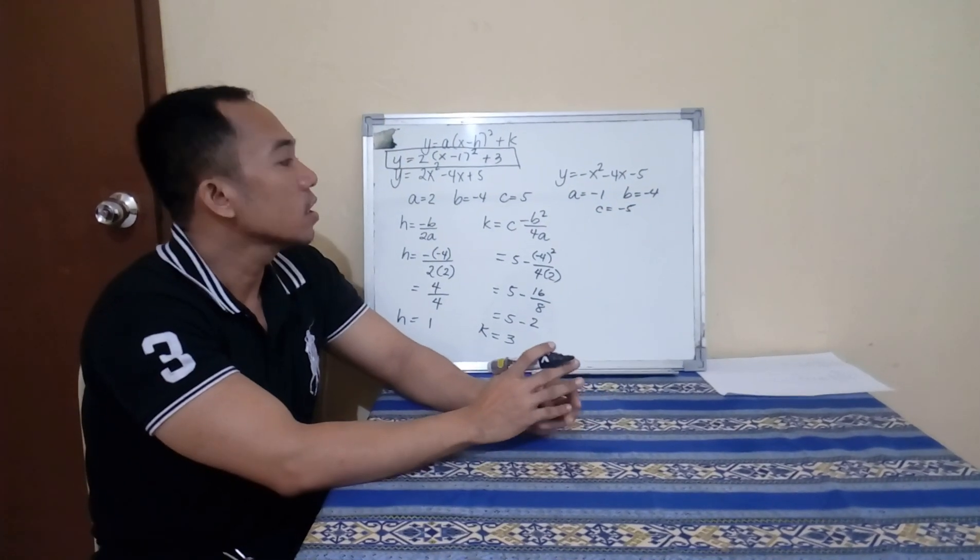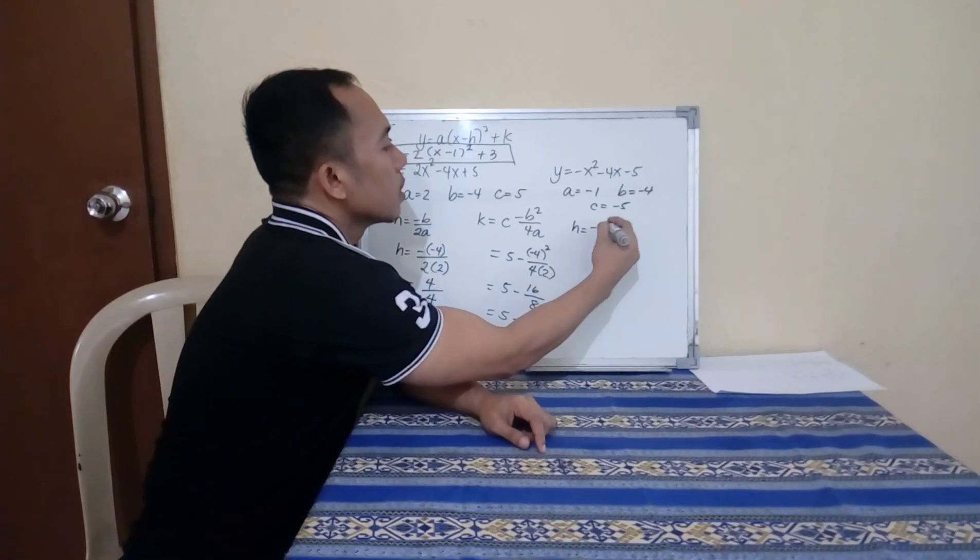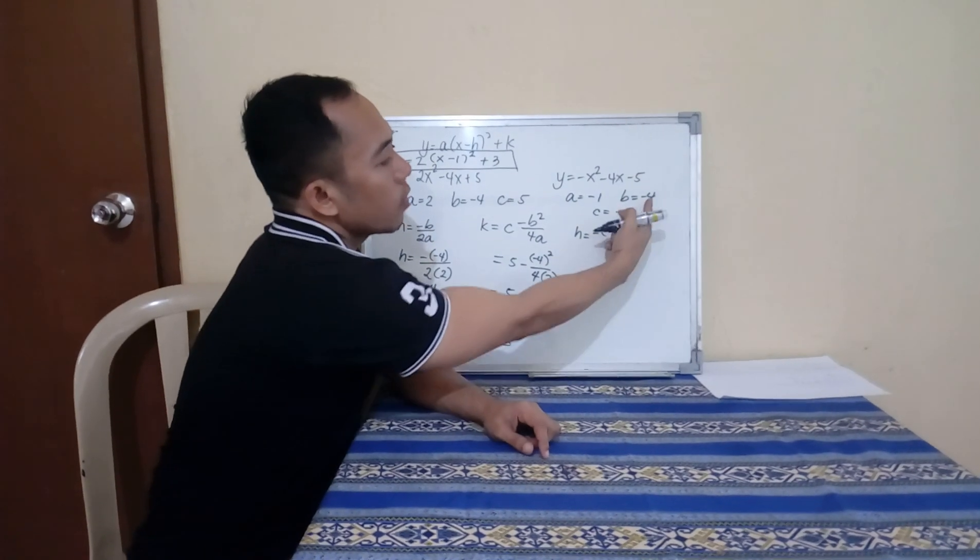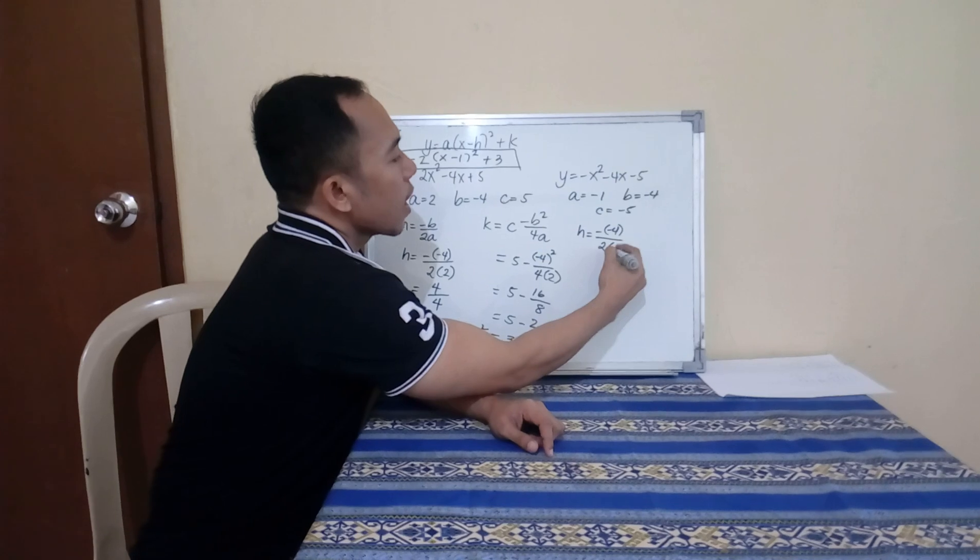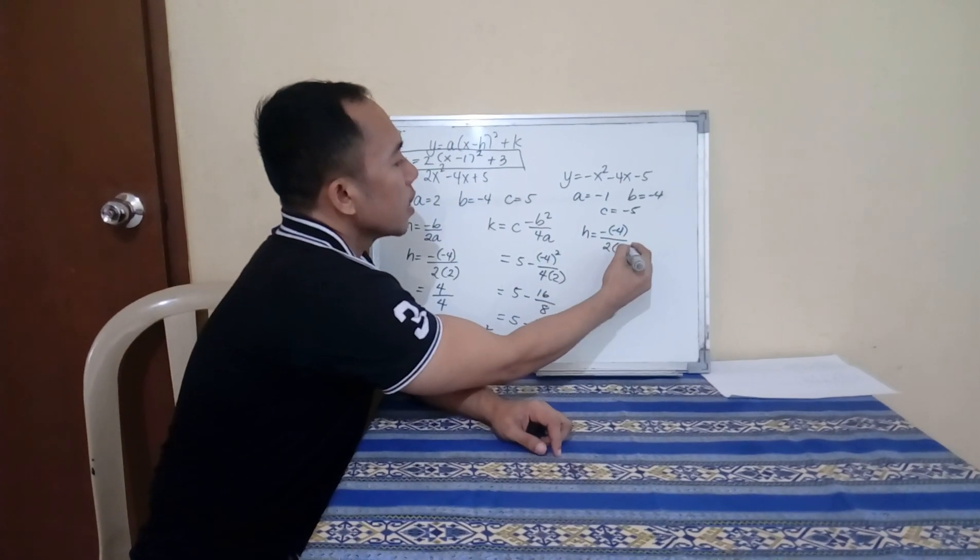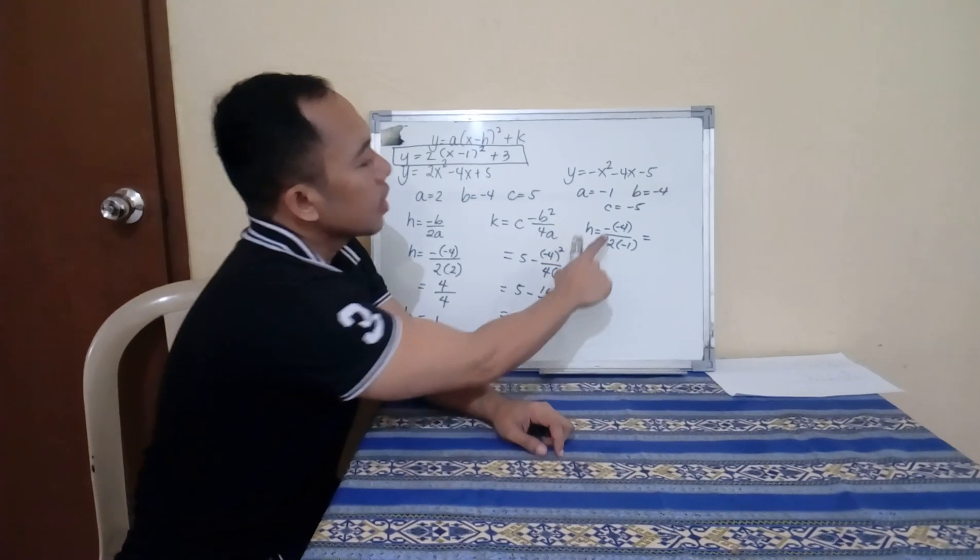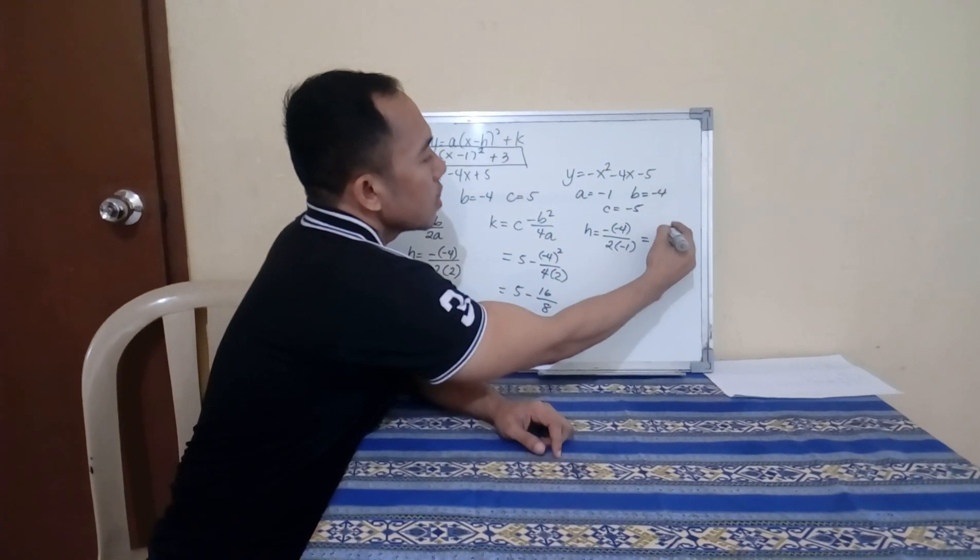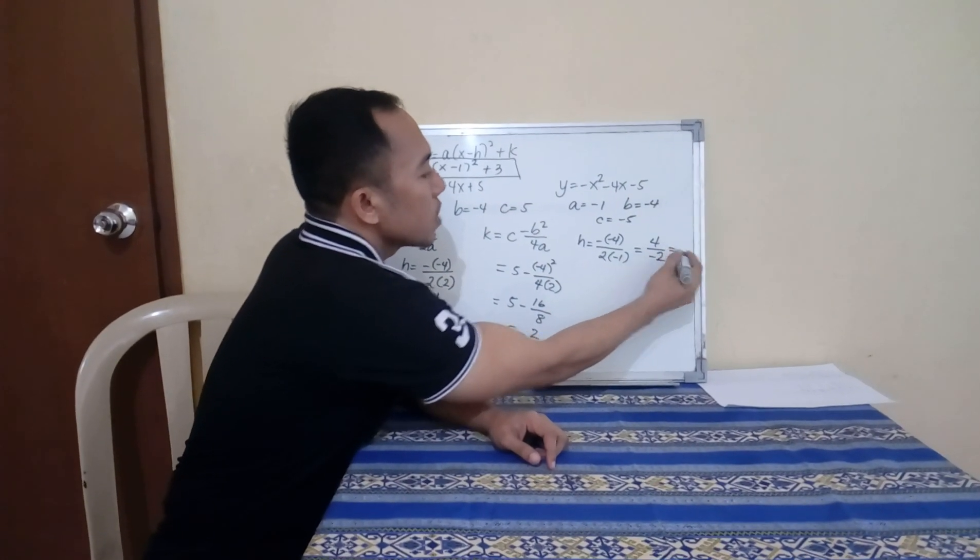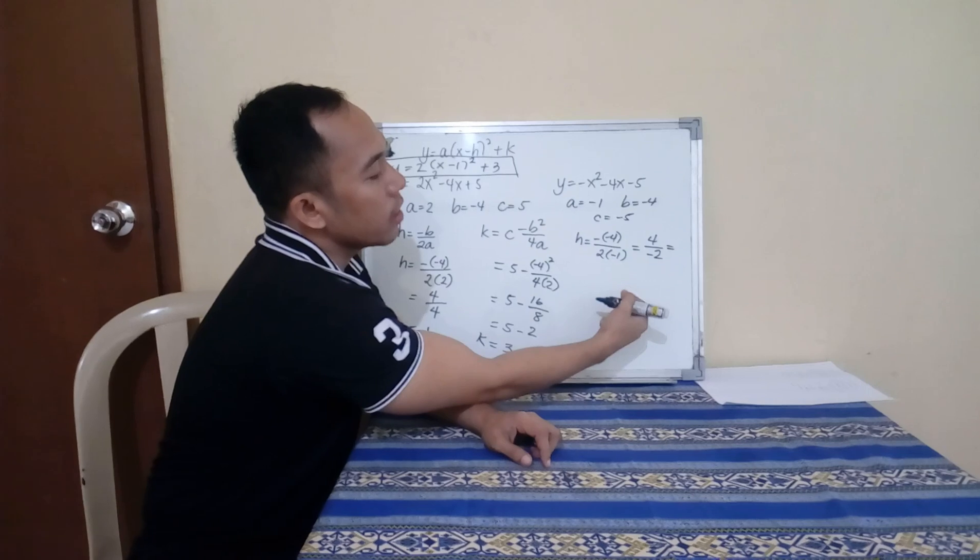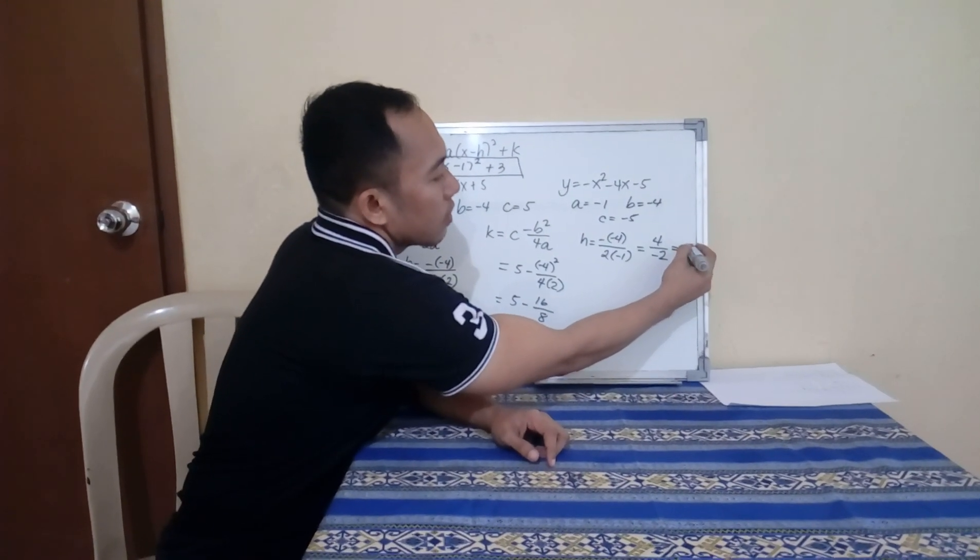Our H is negative B, which is negative 4, over 2 times our A which is negative 1. Since you have different signs, 4 and negative 2, just divide it. The answer is negative 2. So our H is negative 2.